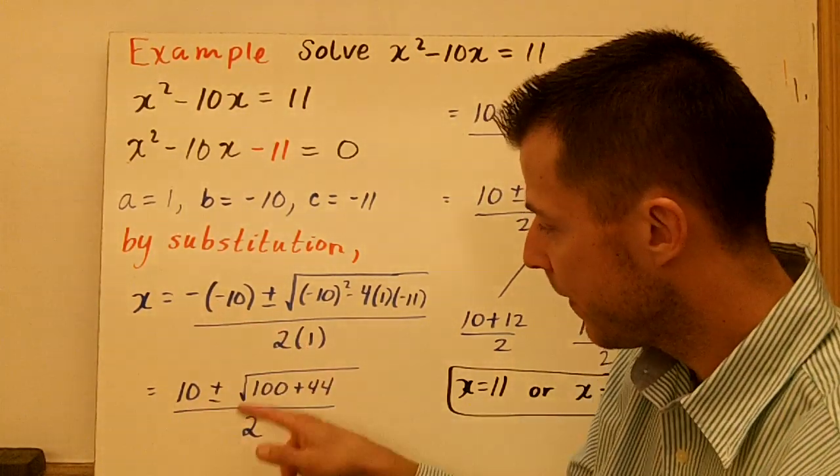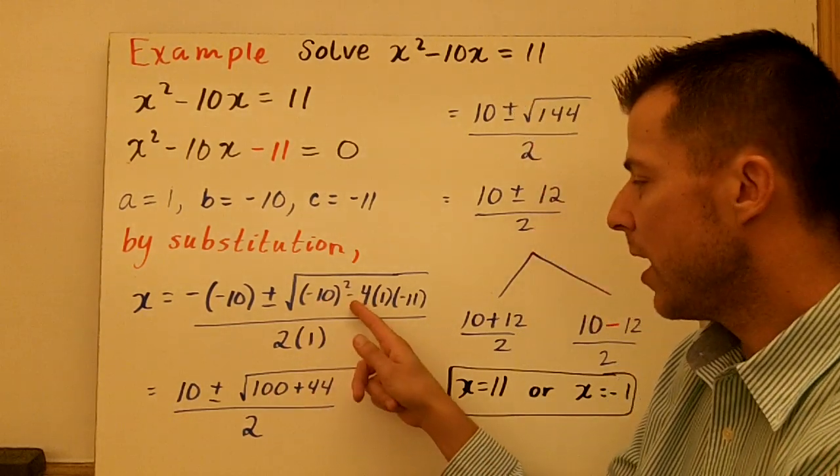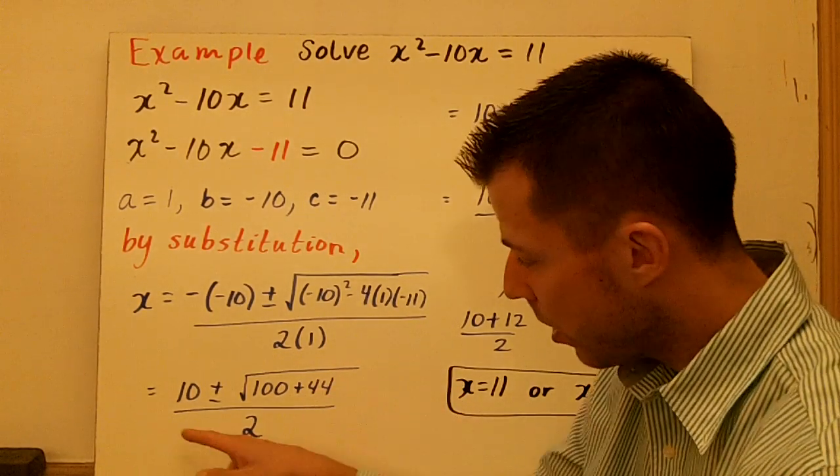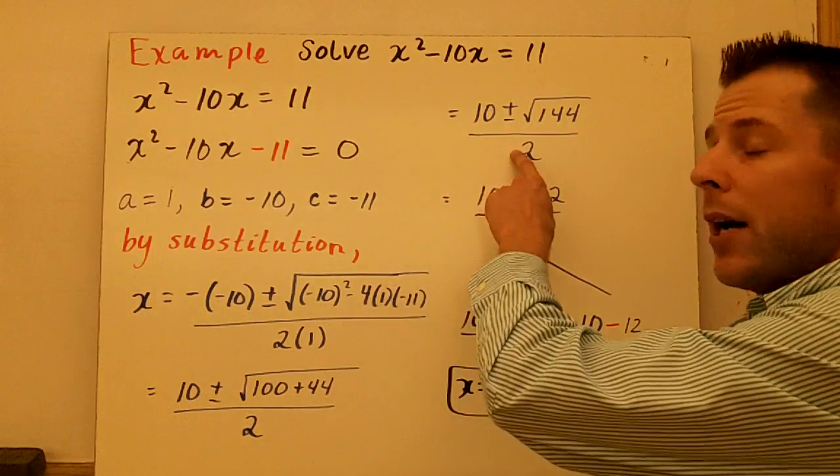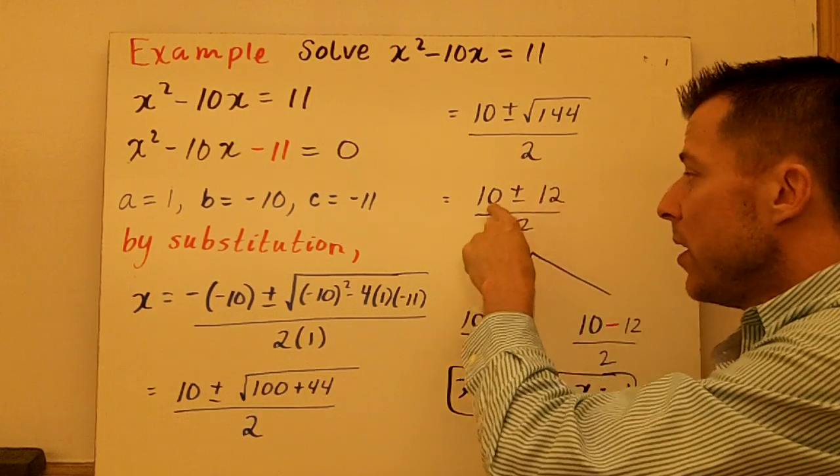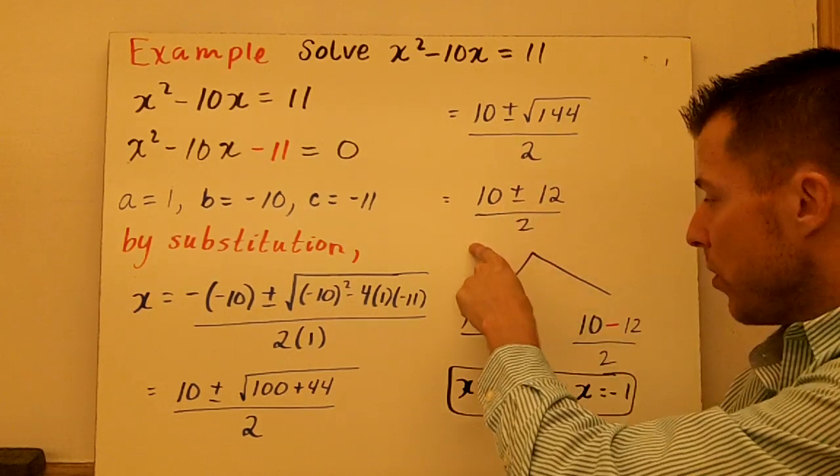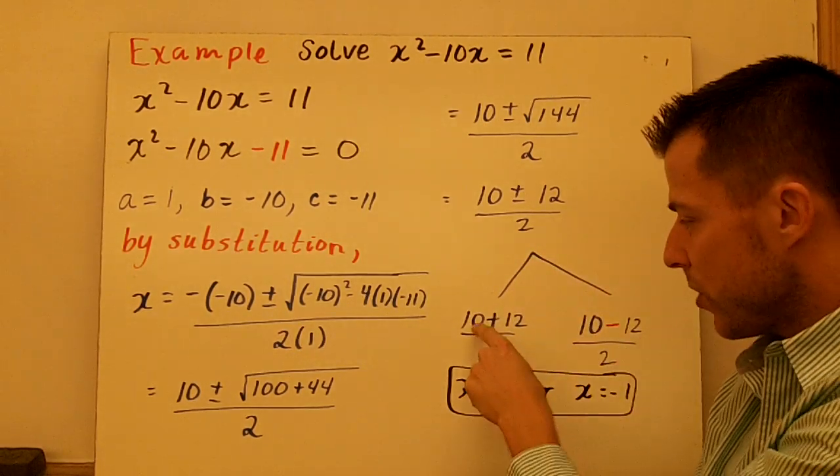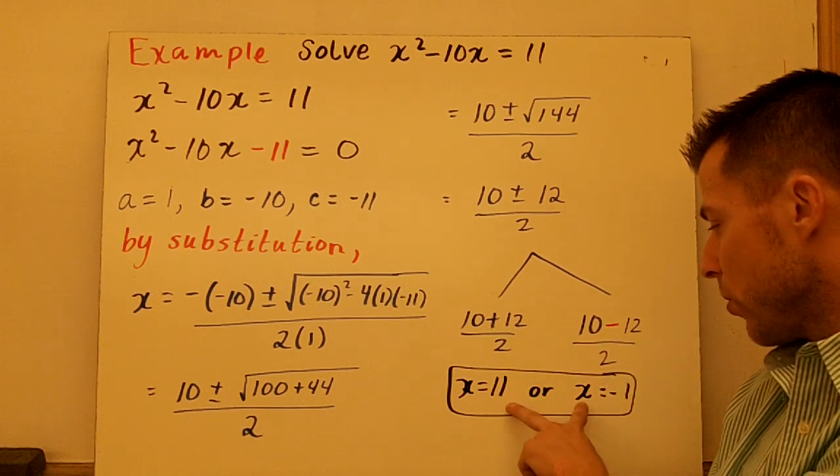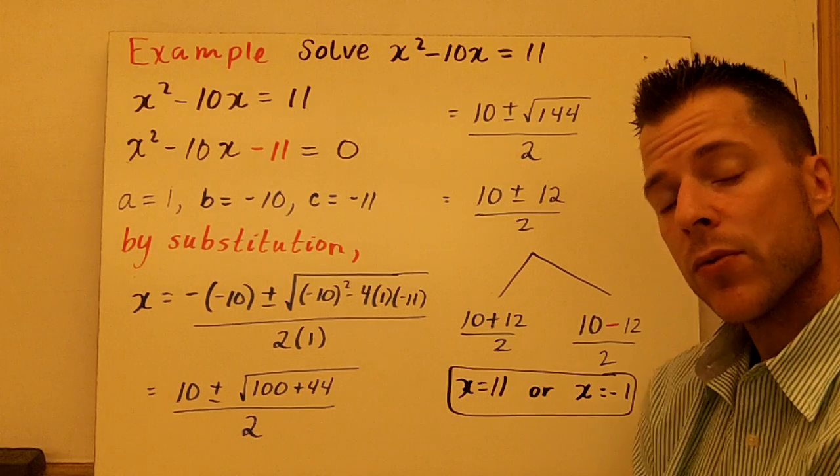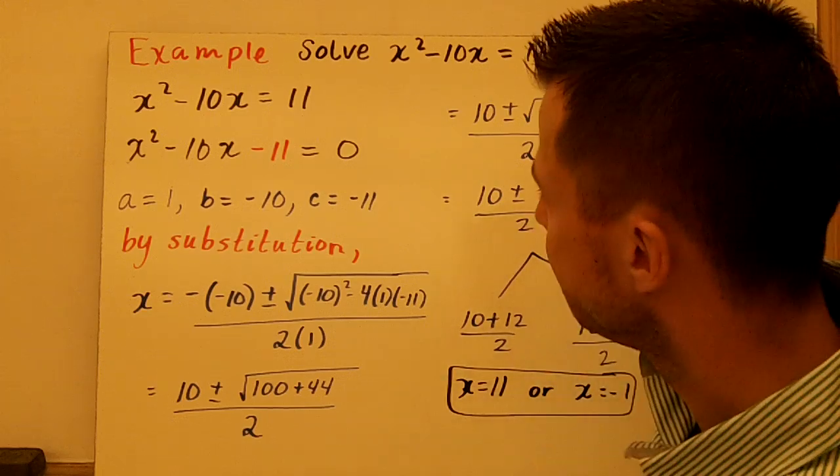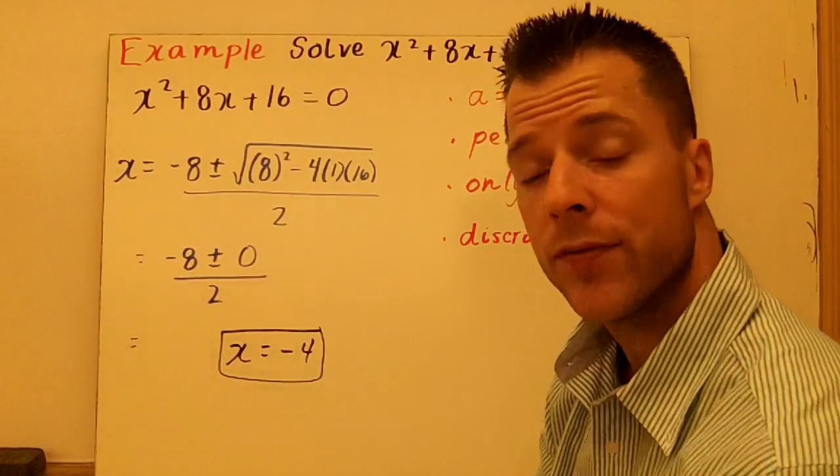The opposite of negative 10 is 10. Negative 10 squared is 100 minus 4 times negative 11. So minus negative 44 is plus 44, all divided by 2. I continue to simplify, and I just wrote 144. 144 is a perfect square. It's 12. So you get 10 plus or minus 12 all over 2. Then I branch off from my two possible solutions: 10 plus 12 over 2, or 10 minus 12 over 2. So my two roots are 11 and negative 1. That's what x equals, that's where the quadratic will cross the x-axis. That's an example of two real solutions.